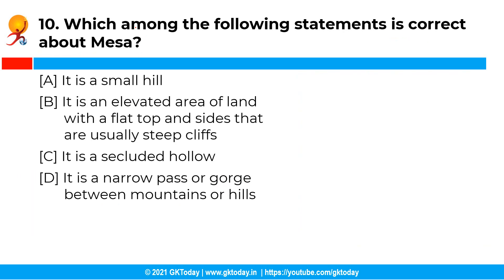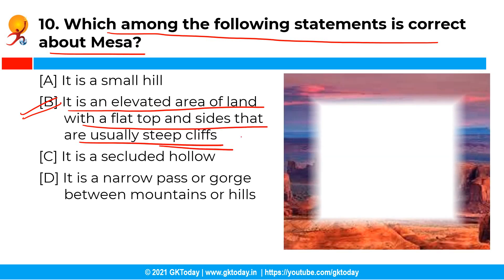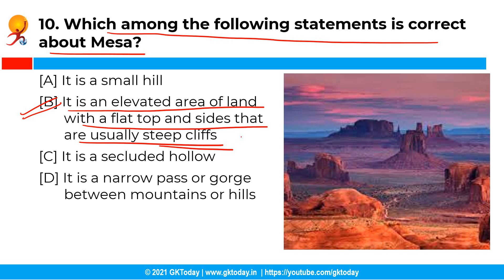The next question is: Which among the following statements is correct about Mesa? The correct answer is option B, that is: it is an elevated area of land with a flat top and sides that are usually steep cliffs. Mesa is an elevated area of land with a flat top and steep cliff sides, and it is exclusively used to refer to landforms built of flat-lying strata.